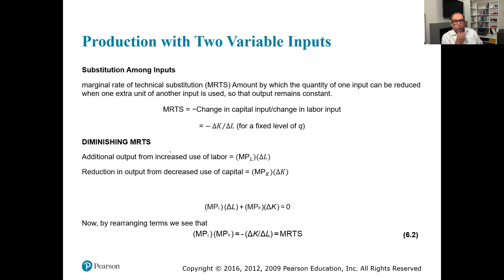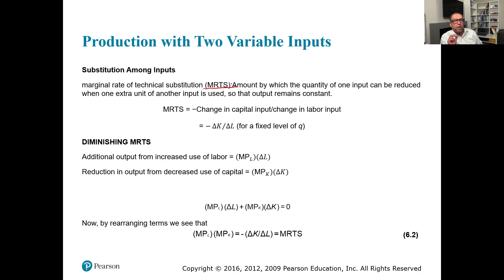When producing output with two inputs, we use the marginal rate of technical substitution, called MRTS. The MRTS is the slope of the isoquant curve. Recalling from the consumer utility maximization chapter, the slope of the indifference curve is MRS — marginal rate of substitution. Here we are finding the slope of an isoquant, in which we are replacing one input with the other. This substitution or replacement is called MRTS — marginal rate of technical substitution.